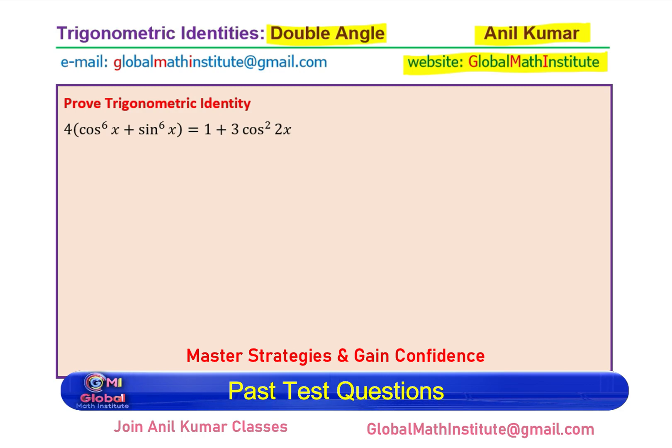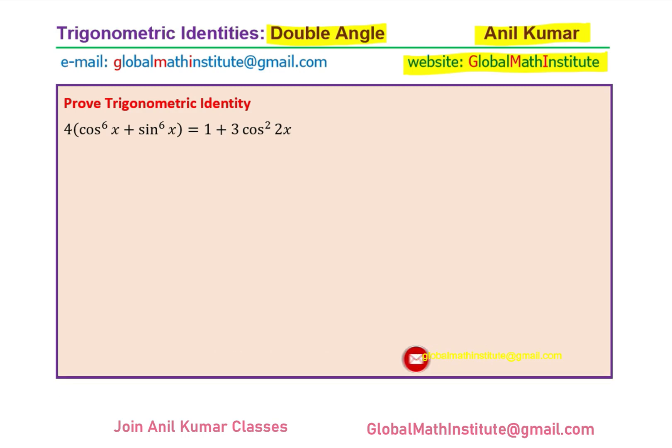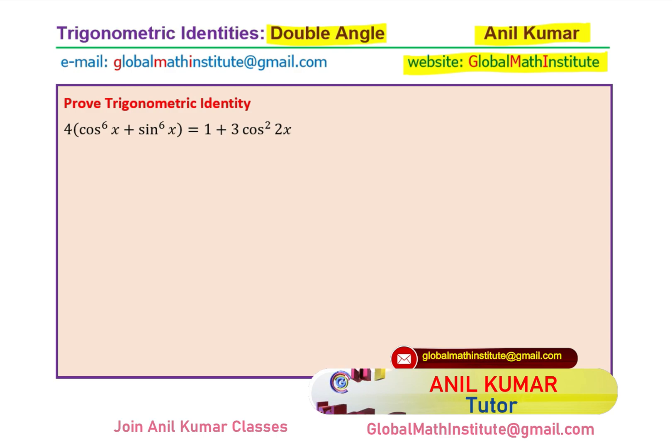4 times cos to the power of 6x plus sin to the power of 6x equals 1 plus 3 cos squared 2x. You can always pause the video, answer the question, and then look into my suggestions.